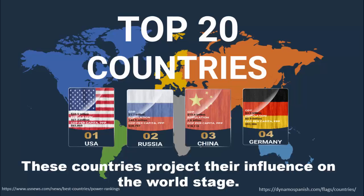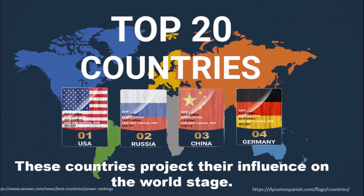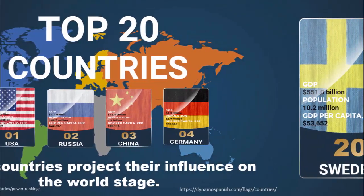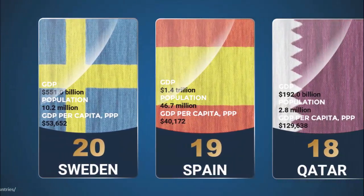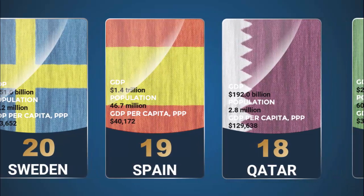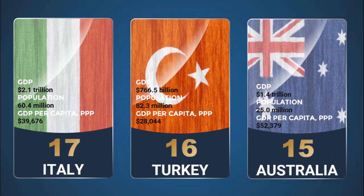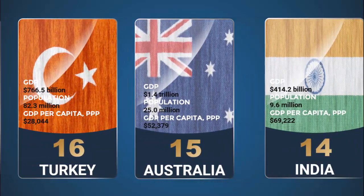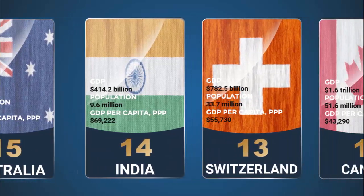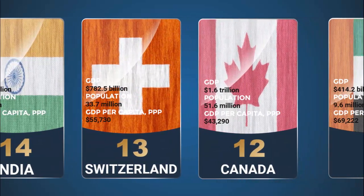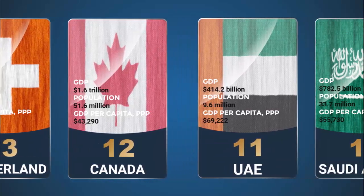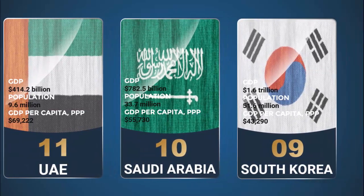In today's tutorial I'm going to show you how to create a top 20 countries infographic slide in PowerPoint. This is an animated slide — when you click, you can see it starts moving. The countdown starts from number 20, beginning with Sweden, and it moves automatically, waiting one or two seconds before moving to the next slide.